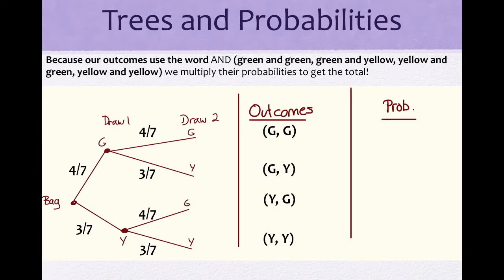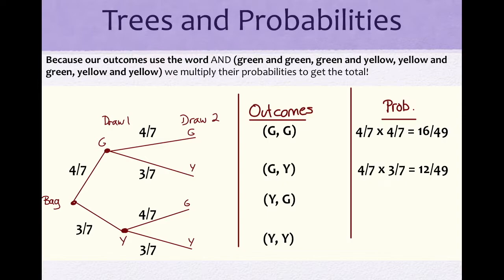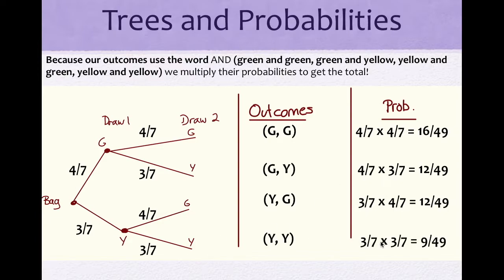We're going to calculate the probabilities by multiplying them. For green and green: 4/7 × 4/7 = 16/49. For green and yellow: 4/7 × 3/7 = 12/49. For yellow and green: 3/7 × 4/7 = 12/49. For yellow and yellow: 3/7 × 3/7 = 9/49. We've now calculated the probabilities of getting each specific outcome.